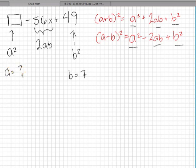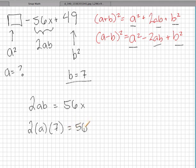And a, well, we don't know a, but we do know that 2ab is equal to 56x. We know what b is, so let's fill that in. 2 times a times 7 is equal to 56x.